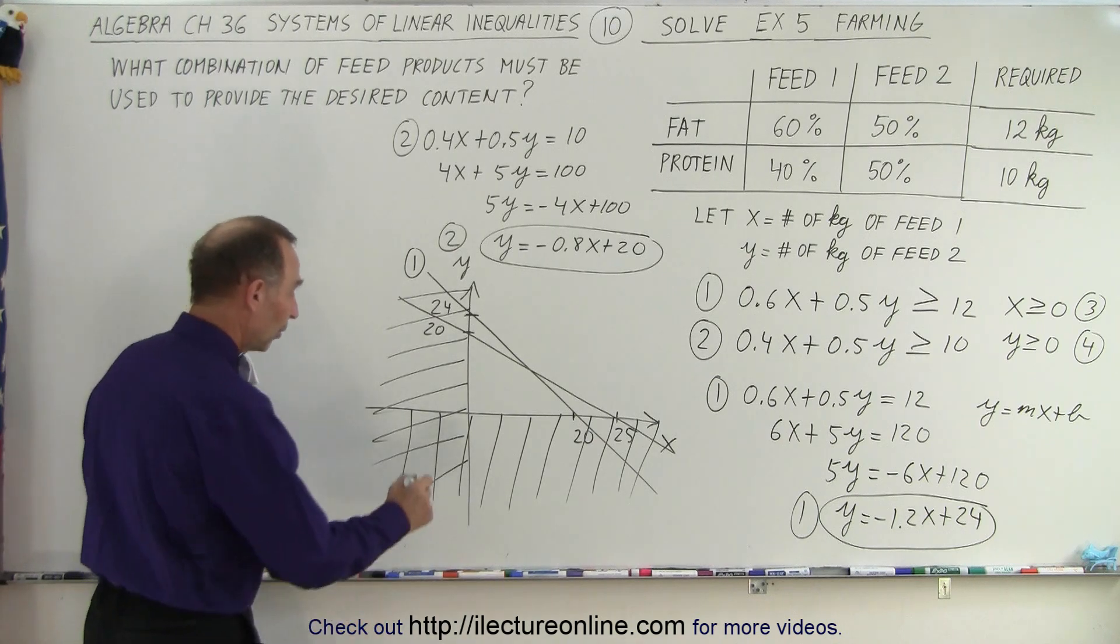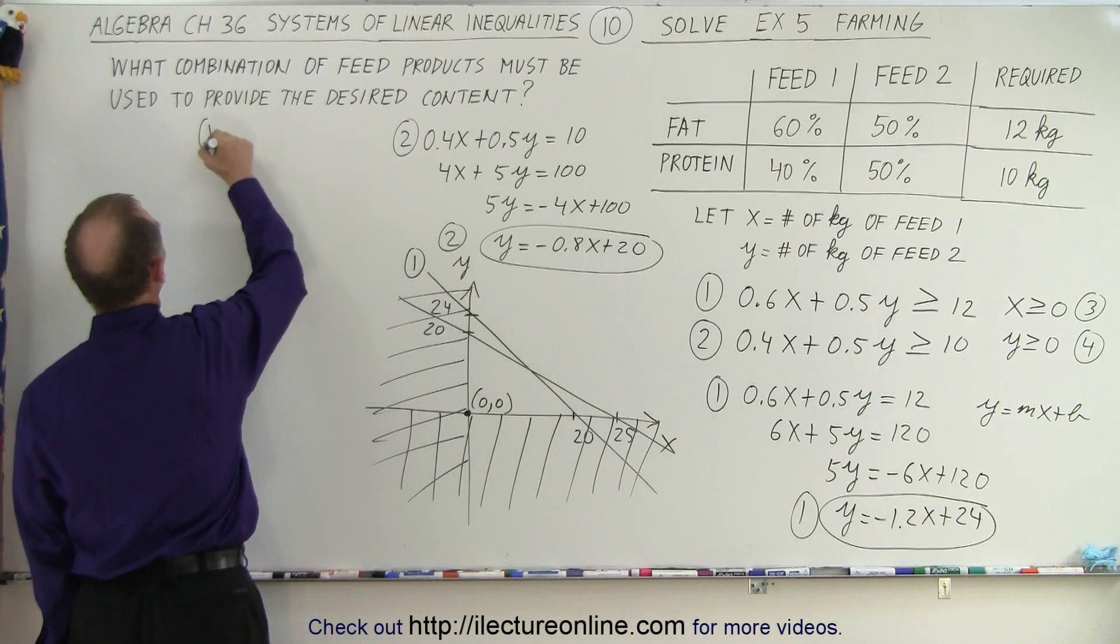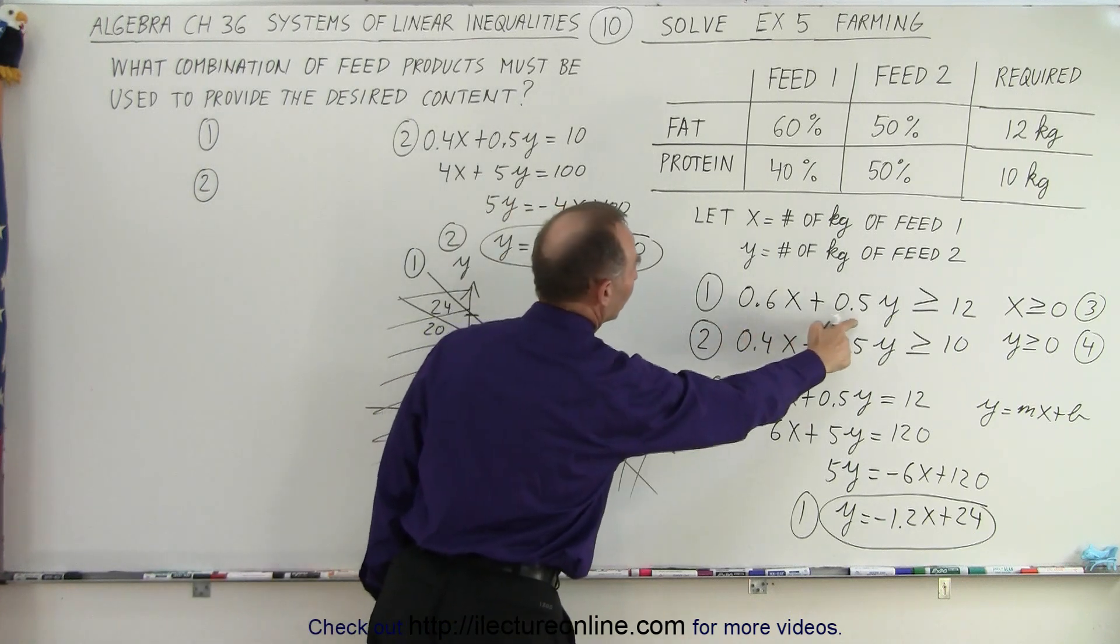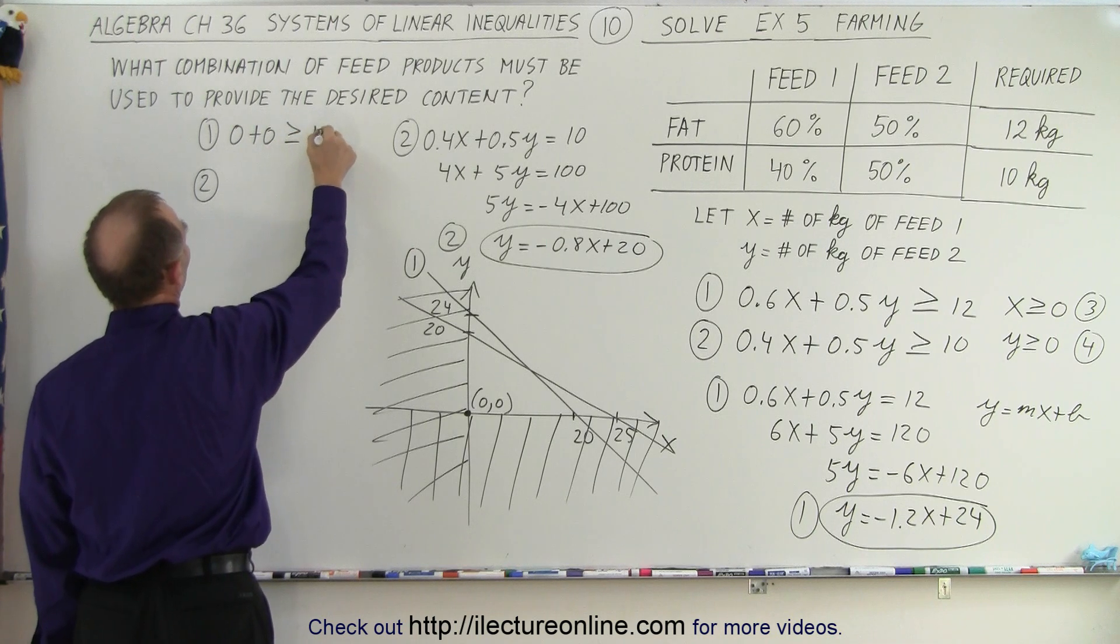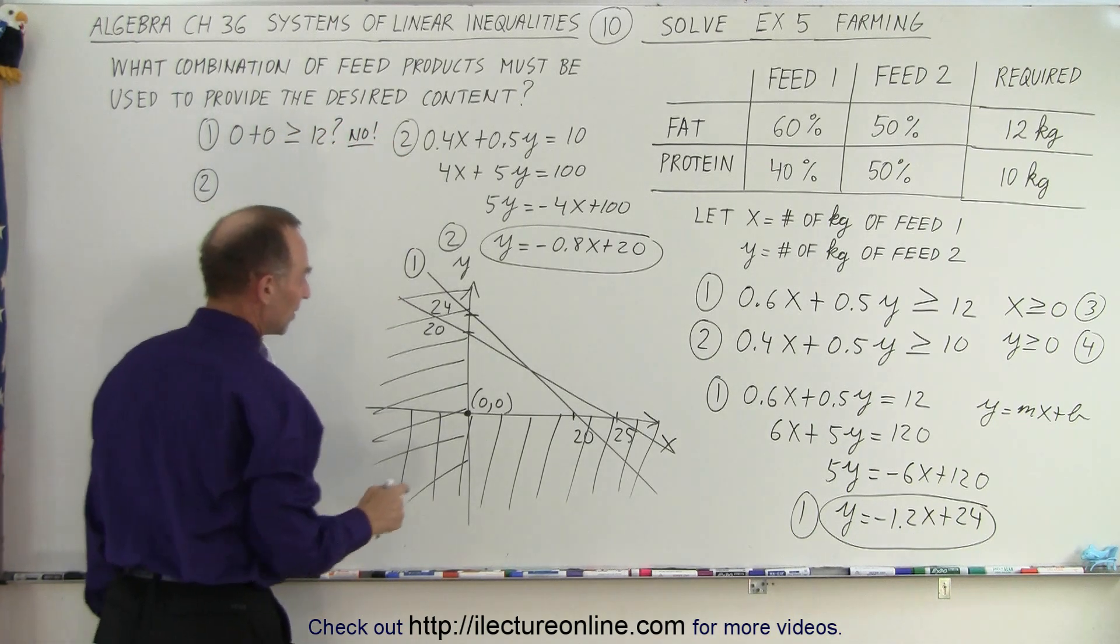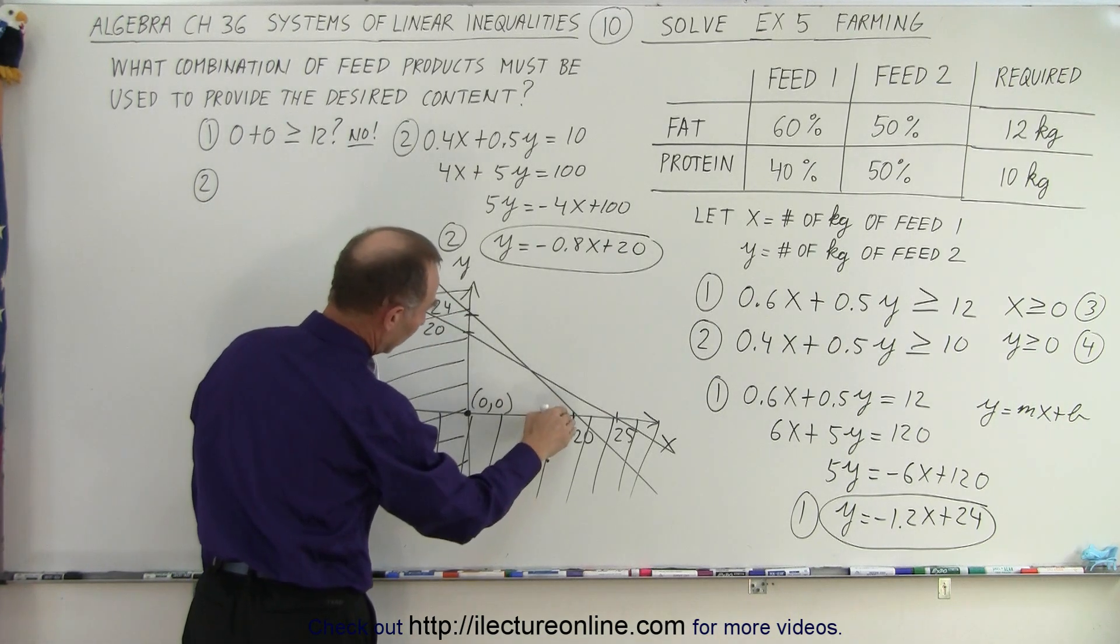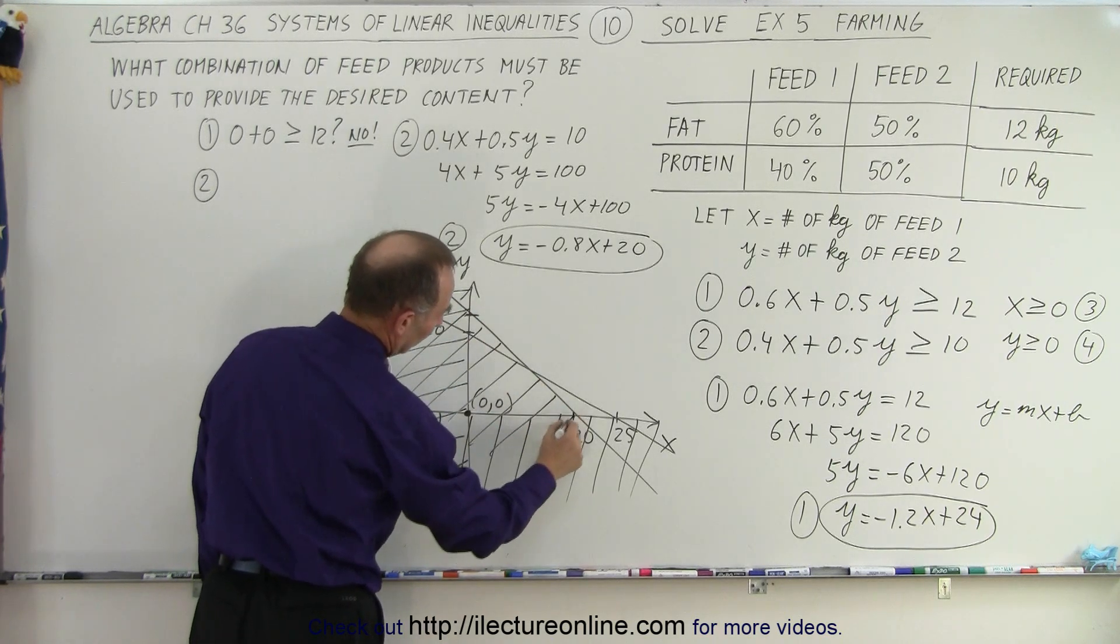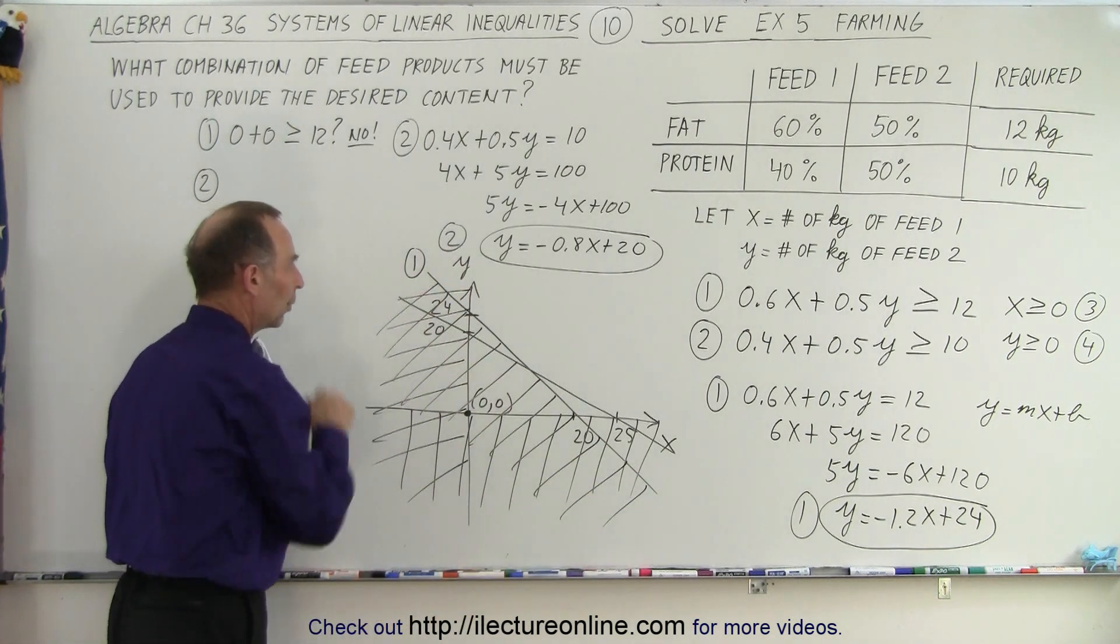All right, now we want the test point. So pick a test point. I like 0, 0. And we're going to put that into the two inequalities, 1 and 2. For one, put in 0 plus 0, is that greater than 12? 0 plus 0, is that greater than or equal to 12? Question mark. And the answer, of course, is no. It's not. That means that this is on the incorrect side of line number one, which means we want to get rid of that. So this is not the region that we want. So we get rid of everything that does not belong relative to line number one.